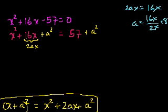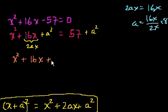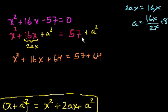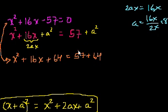So a is 8. We can rewrite that expression as x squared plus 16x plus a squared — well, 64, because a is 8 — is equal to 57 plus 64. All we've really done is add 57 to both sides to get it on the right-hand side, and then add 64 to both sides so that the left-hand side expression takes the perfect square form.